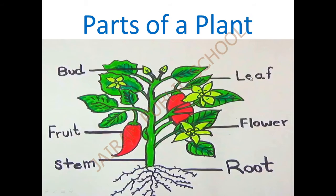Next is the leaf. L-E-A-F, leaf. We have many leaves. When compared to all the fruits and buds, the leaves are the major part - there will be more leaves in the plants as well as in the trees. See the color of the leaf, it's green. Most plants will be green in color because they absorb sunlight - that color is called as chlorophyll.